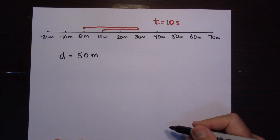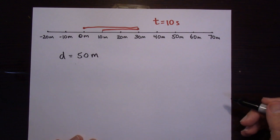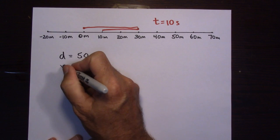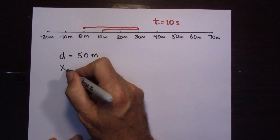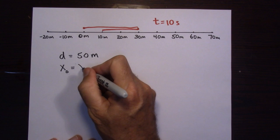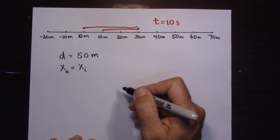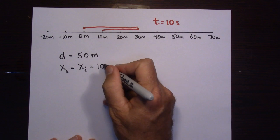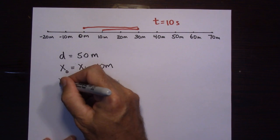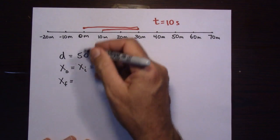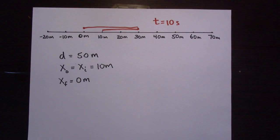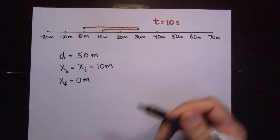Now let's talk about what position is. Position is just the location of an object. It started out with a position of 10 meters — that's its initial position, sometimes called x-naught, x of 0, or x-initial. The final position is the 0-meter position. Position is just the location at any point along the way.